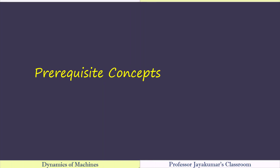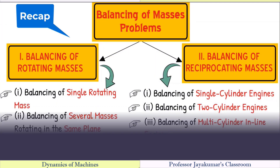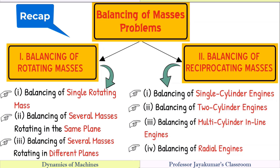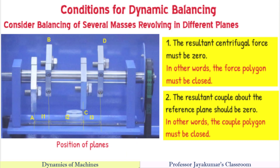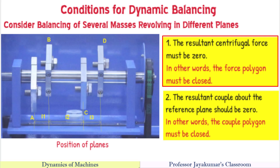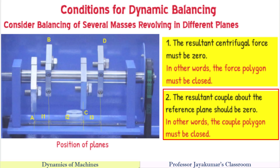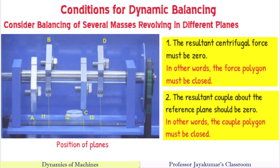Let us take a quick recap on the various prerequisite concepts that are required to solve this problem. This is the classification of balancing of masses problem. We are under balancing of rotating masses, under balancing of several masses rotating in different planes. These are the two conditions to be satisfied so that masses are in dynamic balancing. The first condition is that the resultant centrifugal force must be zero, or in other words the force polygon must be closed. The second condition is that the resultant couple about the reference plane should be zero, or in other words the couple polygon must be closed. We are going to use these two conditions to solve the numerical problem.